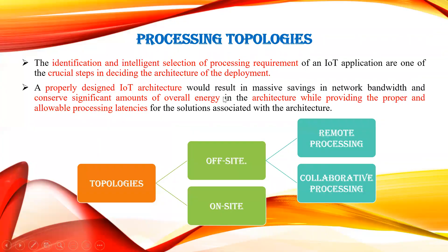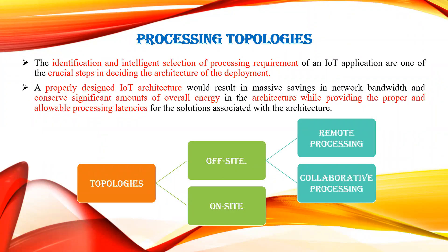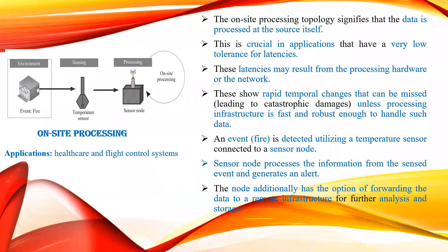Based on this, we have divided into topologies: off-site and on-site, where off-site topology is further divided into remote processing and collaborative processing. This topology division exists because we are identifying intelligent processing requirements for different IoT applications. A properly designed IoT architecture will result in massive savings of network bandwidth and reduce pressure on the internet.